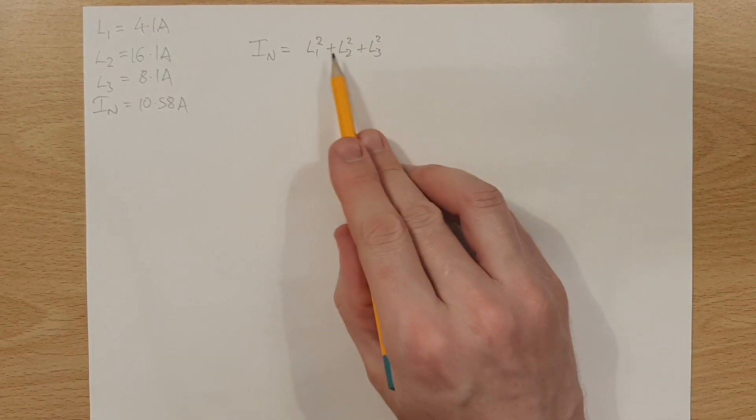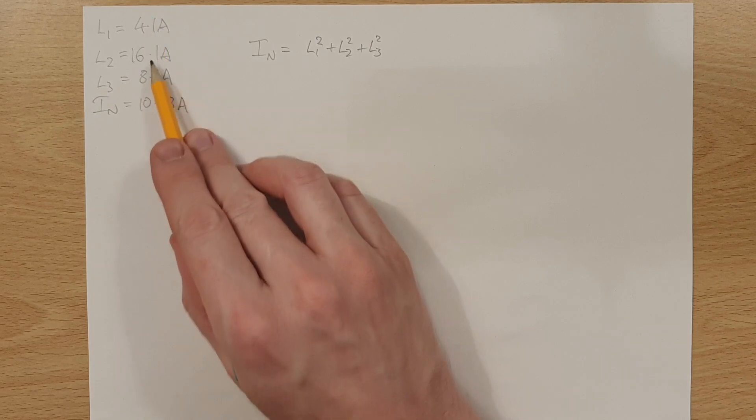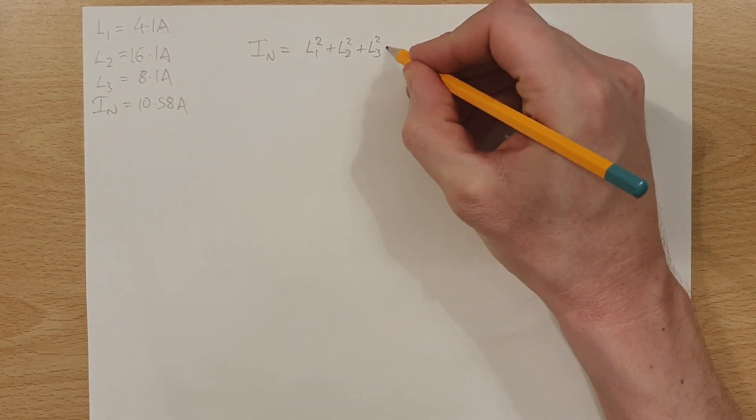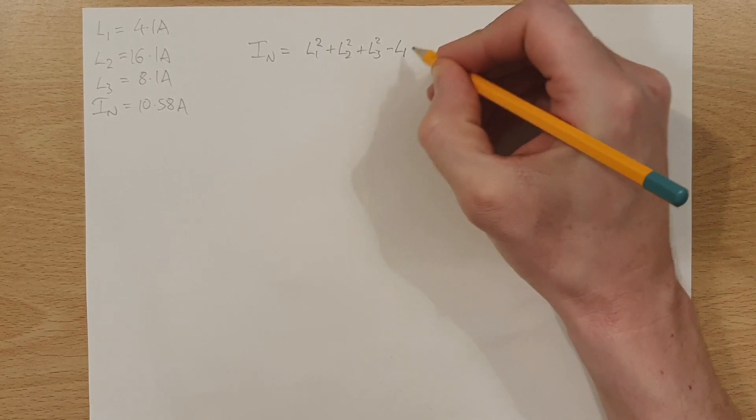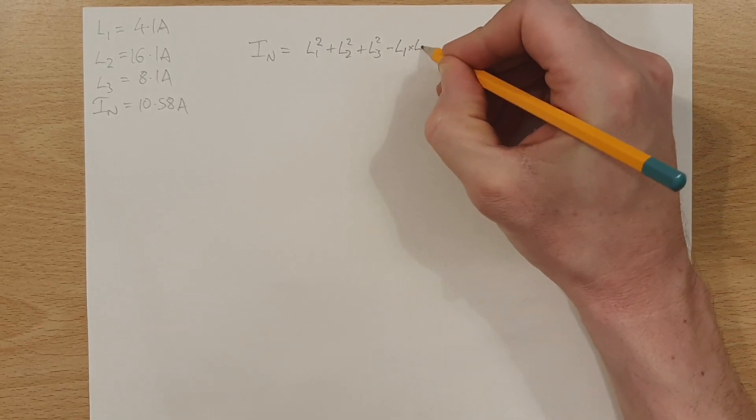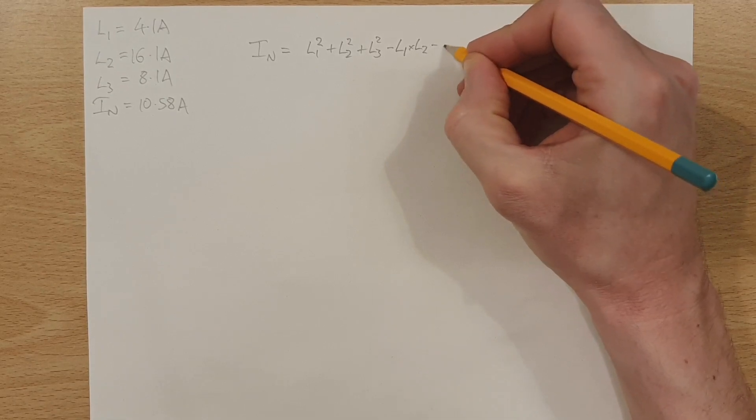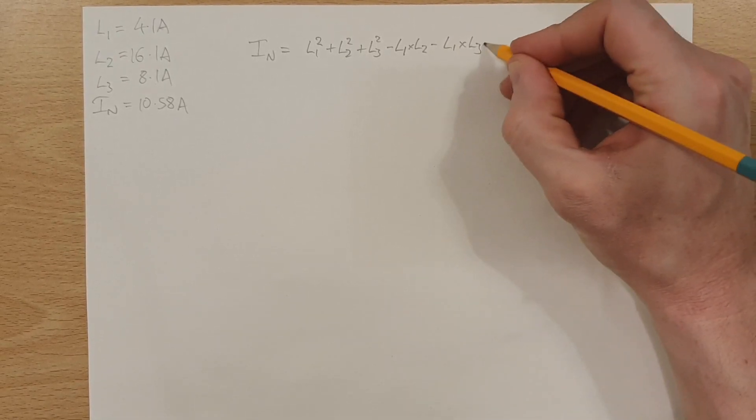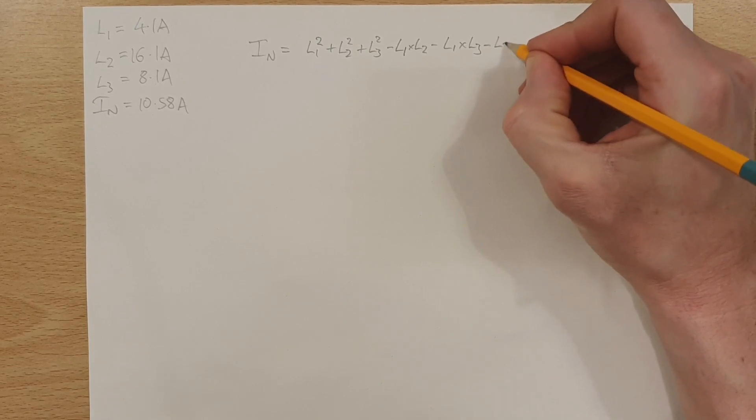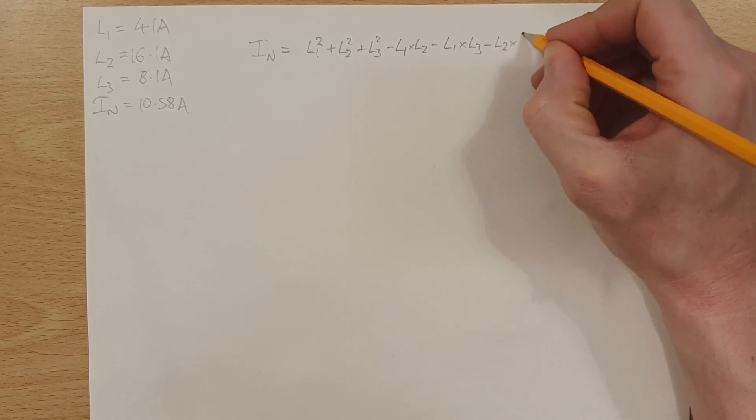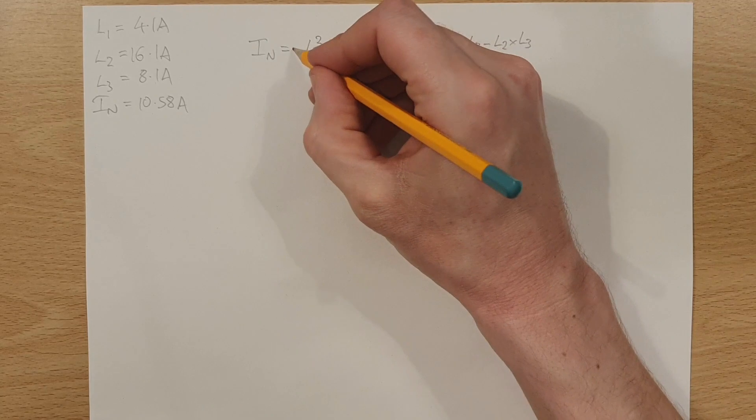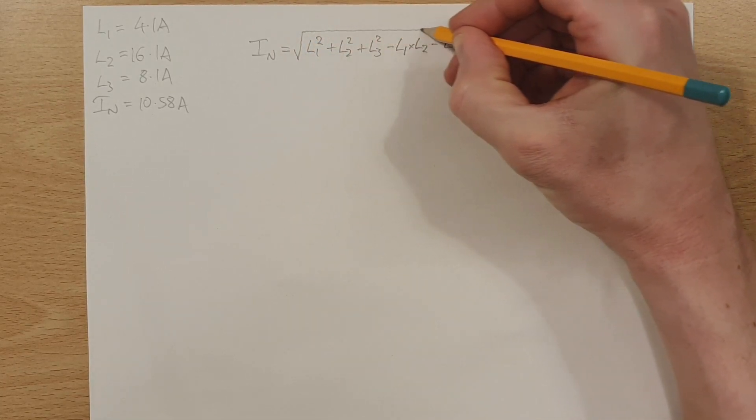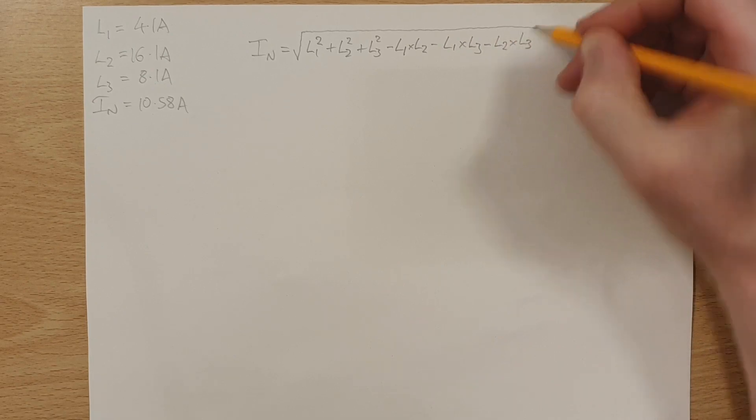We then add on to the end of this minus L1 multiplied by L2 minus L1 multiplied by L3 minus L2 multiplied by L3. And then that whole thing needs to be square rooted. So we square root that whole thing there.